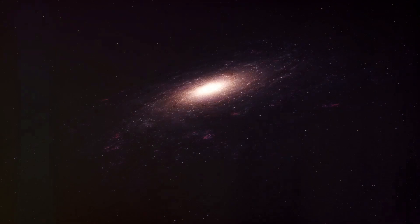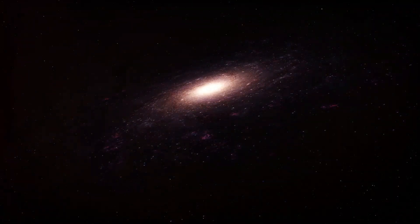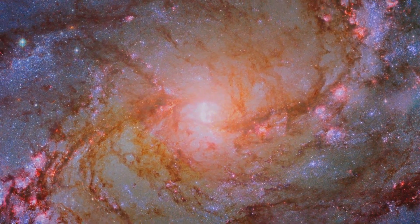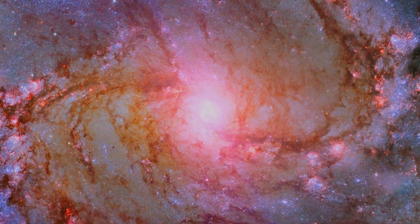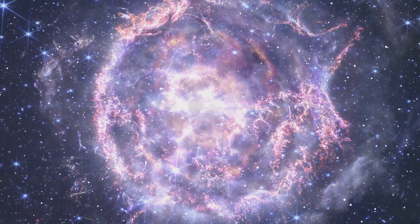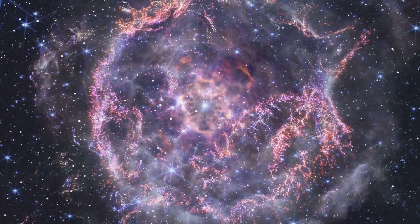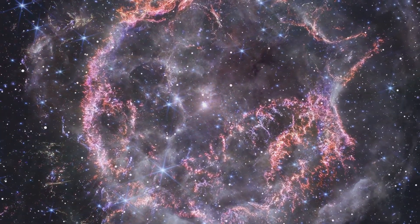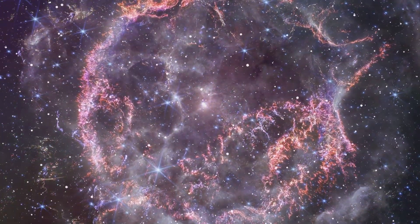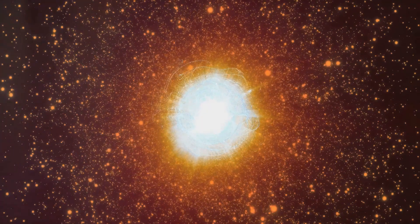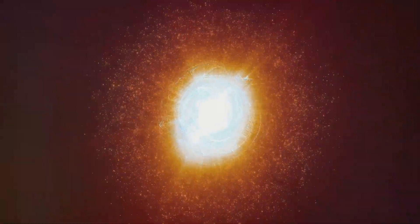Galaxies, despite the constant motion and change within them, can remain relatively unchanged for billions of years. This stability is a testament to the delicate balance of forces at play in the universe. Stars form, live out their lives, and die, but galaxies persist for billions of years. The life cycle of stars is a crucial part of the cosmic balance. When stars die, they often leave behind remnants that can trigger the formation of new stars, continuing the cycle of birth, life, and death.